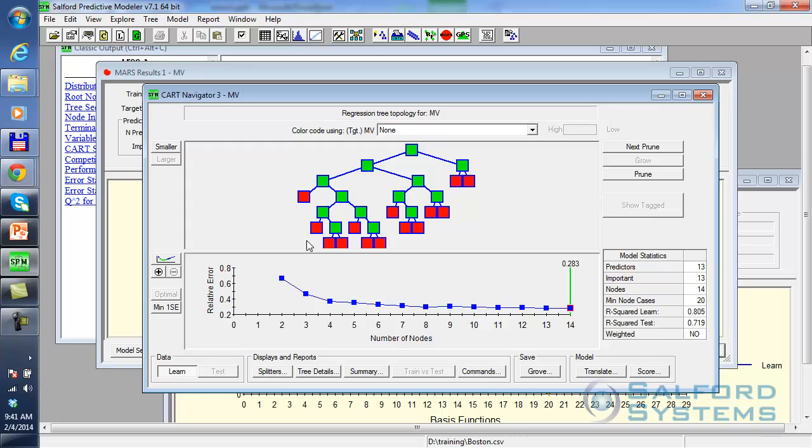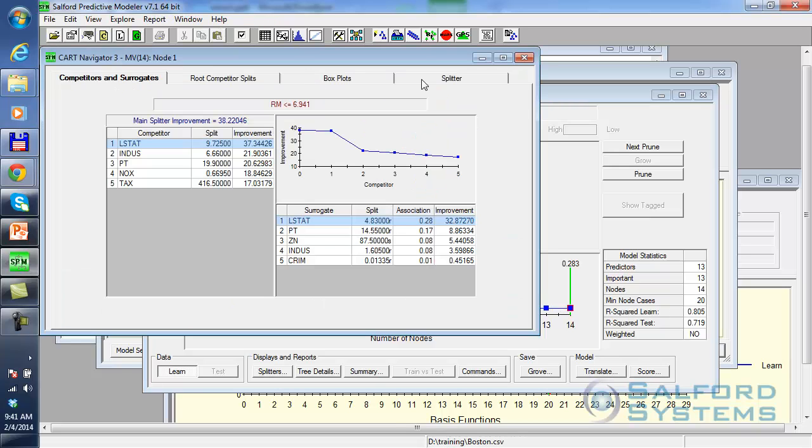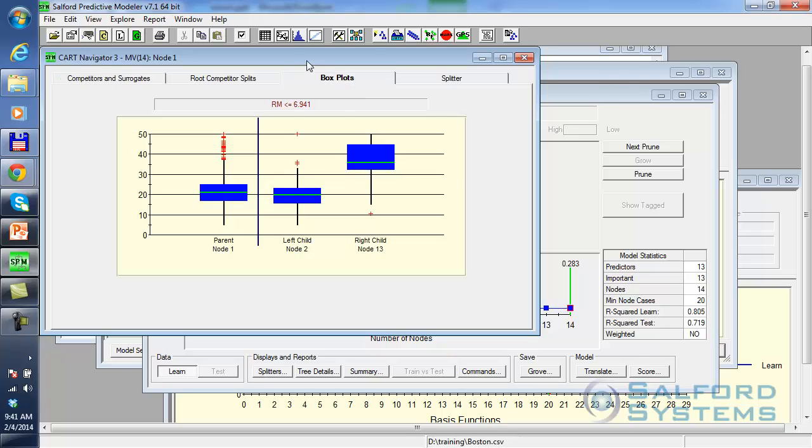It comes back with this tree structure. Overall, it identified the 14 node tree as the optimal model. What it does here, when you click in the root node and go under box plots, what you can see in the parent node, you have your target variable. We've seen that MV spreading between 10 and 50, with the average about 21.2. On the left-hand side, as the result of applying a single split based on house size, and remember, 6.9 is within that 6.5 to 7.5 range that we have identified in our MARS plots.